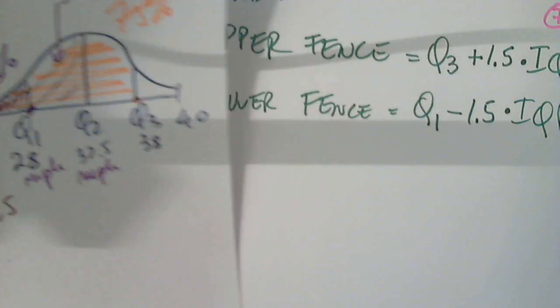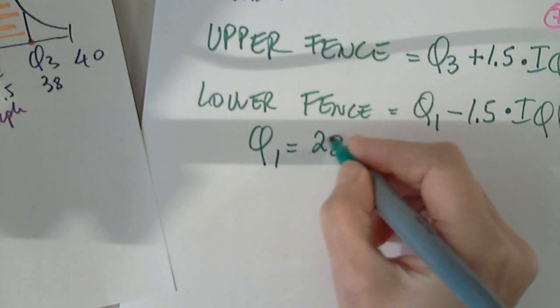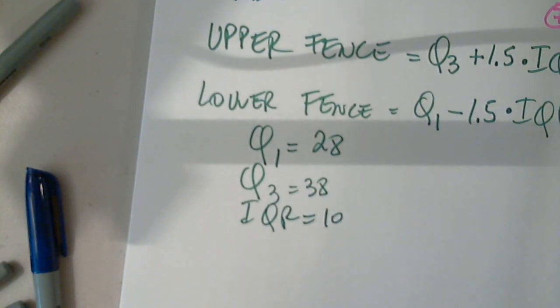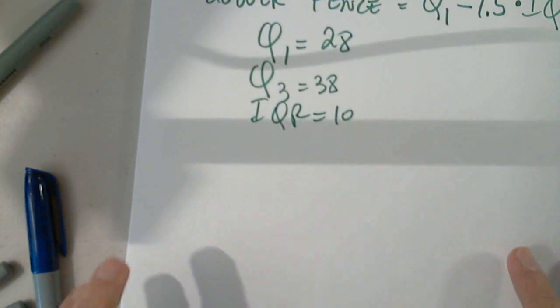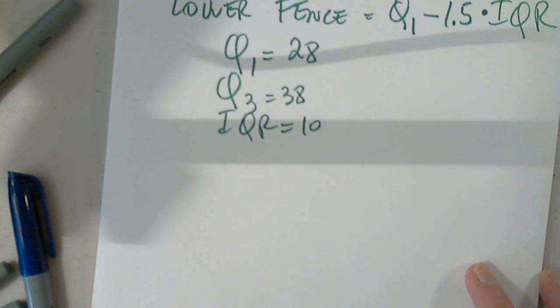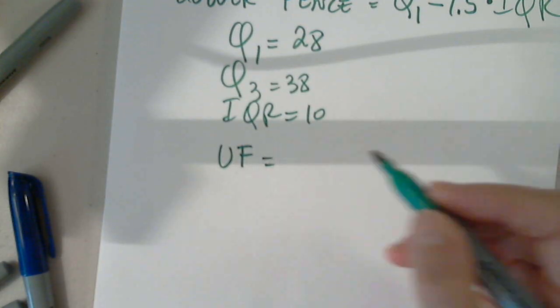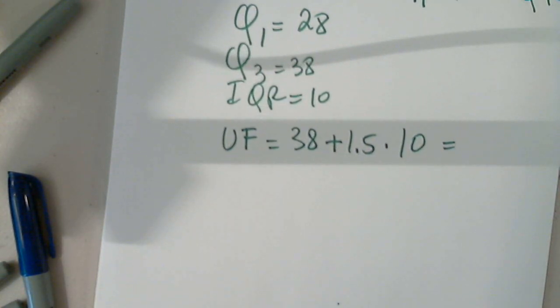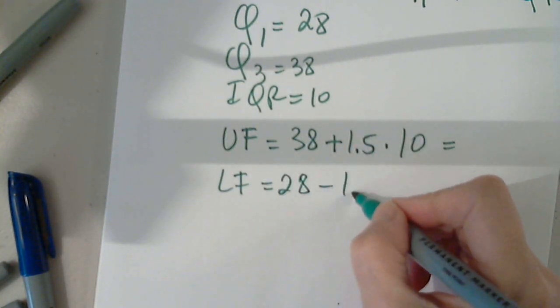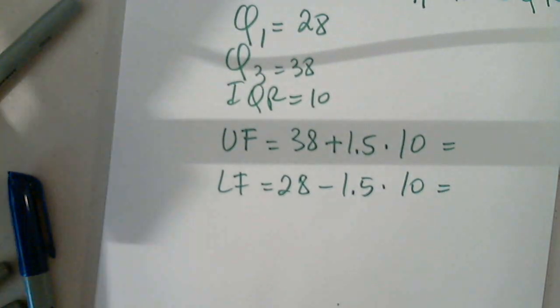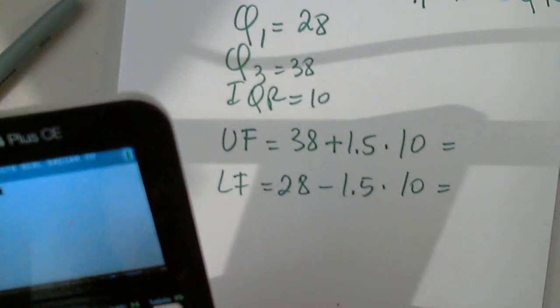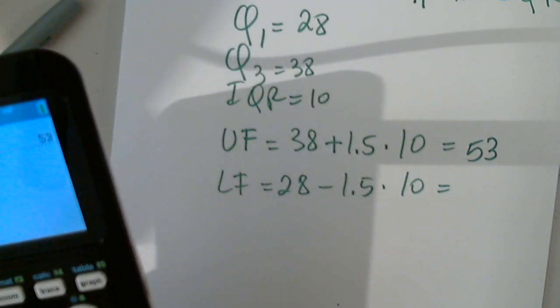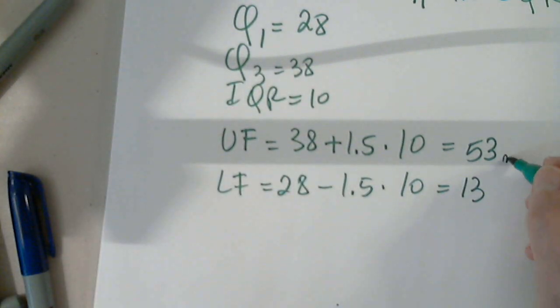So, coming back to our example from a few minutes ago, I'm going to copy Q1 again here, which is 28. I'm going to copy Q3, which is 38. I'm going to copy the interquartile range, which was 10. And then decide if this data set that we are looking at has outliers or not. So, upper fence UF is Q3, 38, plus 1.5 multiplied by the interquartile range, and we'll calculate this in a moment. The lower fence is the first quartile, which is 28, minus 1.5 multiplied by 10, and let's calculate now both. So, 38 plus 1.5 times 10, I'm getting 53. And 28 minus 1.5 times 10, I'm getting 13. Of course, all these for our data set are miles per hour.